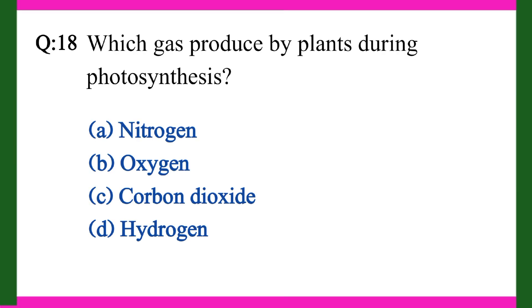Question eighteen: Which gas produced by plants during photosynthesis? A. Nitrogen, B. Oxygen, C. Carbon dioxide, D. Hydrogen. Right answer is B. Oxygen.